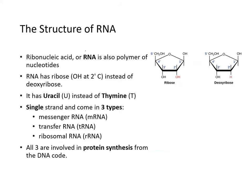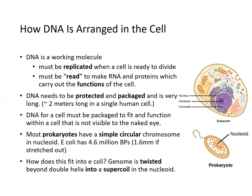RNA — ribonucleic acid — is also a polymer of nucleotides. RNA has ribose instead of deoxyribose, because it contains a hydroxyl group at the number two carbon, and it uses uracil instead of thymine. RNA is single-stranded and comes in three types: messenger RNA, transfer RNA, and ribosomal RNA. All three are involved in protein synthesis starting with the DNA code.